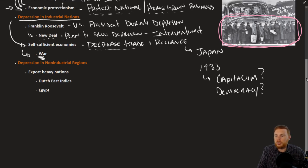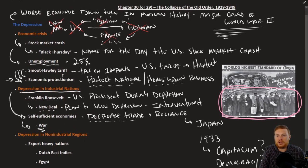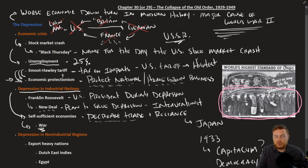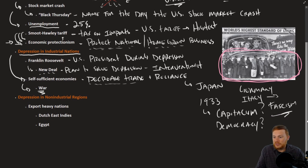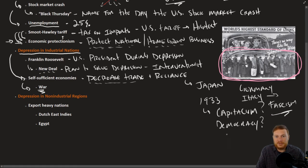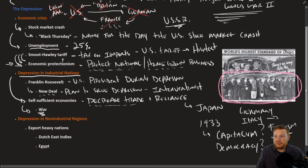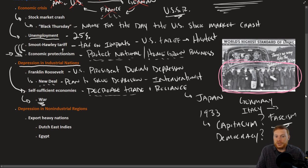The one part of the world insulated from the global depression was the USSR — the first and only communist regime at the time. The Soviet Union, under Joseph Stalin and five-year plans, was transforming from an agricultural to an industrial nation. This transformation was very violent, though that wasn't well known to the outside world at the time. Communism thus looked like an alternative. Other nations like Germany and Italy would turn toward a new ideology — fascism — considered a third way. Capitalism and democracy had failed; communism wasn't well supported there; so the third way was fascism.